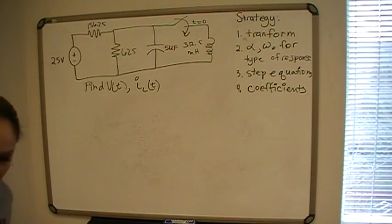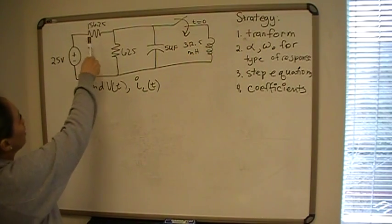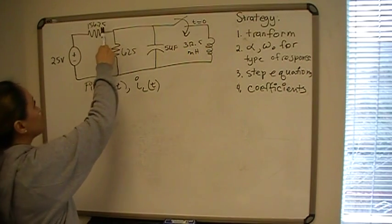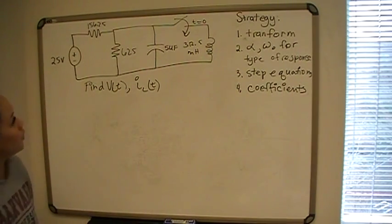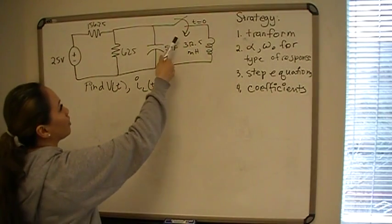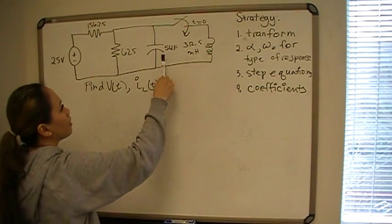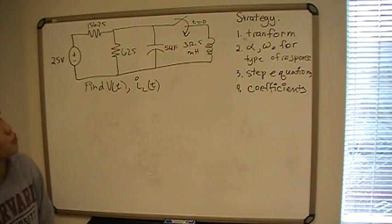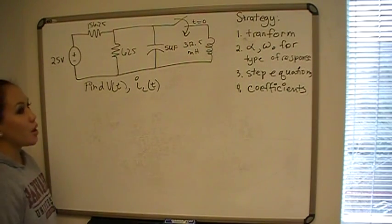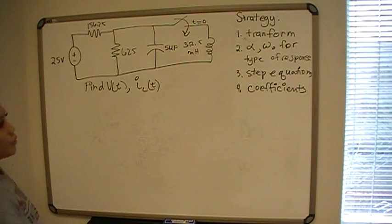In this problem, we're given a circuit with 25 volts connected to 156.25 ohms in series, that whole thing in parallel with 125 ohms, and that in parallel with 5 microfarads. The switch opens before time zero, and after time zero the capacitor is connected in parallel with a 312.5 millihenry inductor. We have to find the voltage and the general step equation formula for the current through the inductor for time greater than zero.